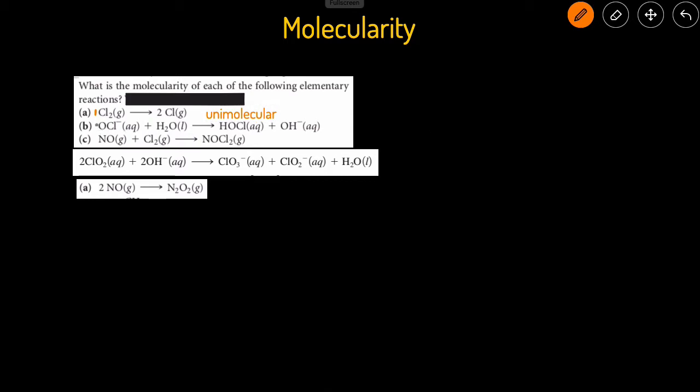In the second one, you can see there's one reactant and another reactant, so this would be bimolecular. And the next one, there's also one reactant plus another, so there's two reactants, making it bimolecular again.